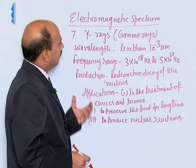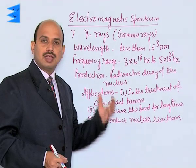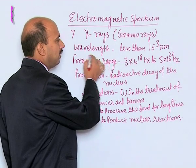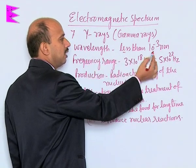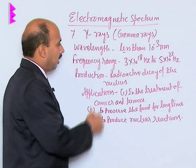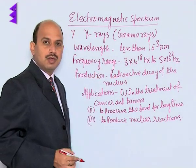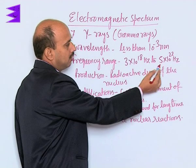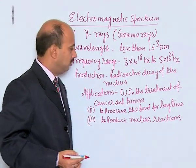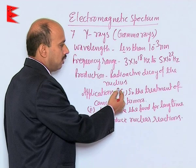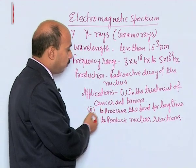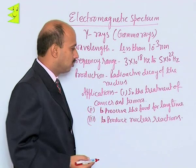Now, the 7th one is gamma rays, and this is the last component of the electromagnetic spectrum. Its wavelength range is less than 10 raise to power minus 3 nanometer, and frequency range is 3 into 10 raise to power 18 hertz to 5 into 10 raise to power 22 hertz. Production: radioactive decay of the nucleus.